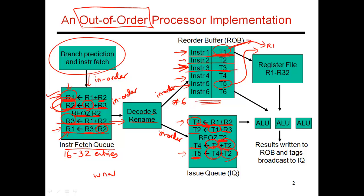So I call this an out-of-order process, but so far everything has been happening in program order. Now this is where the magic comes in. The issue queue is a structure that will finally lead to out-of-order execution. In our earlier in-order pipeline, as instructions enter the pipeline, if there's a data dependence, that instruction gets stalled at the decode stage, and everybody behind it also gets stalled. That was the primary limitation of our in-order processor. Now in this out-of-order processor, the issue queue is the point where you decide if somebody is ready to proceed to the execution stages or not.